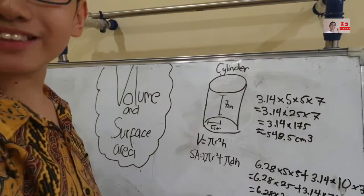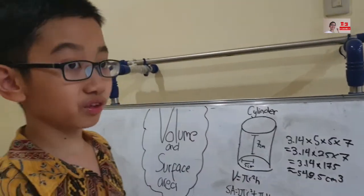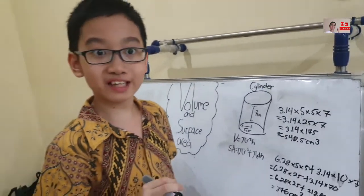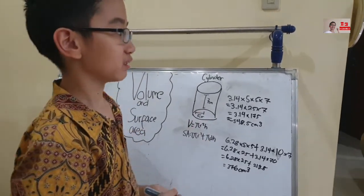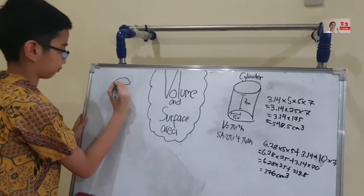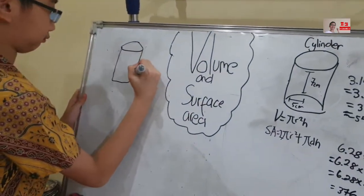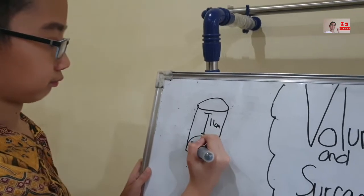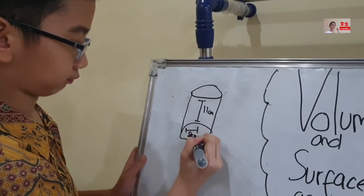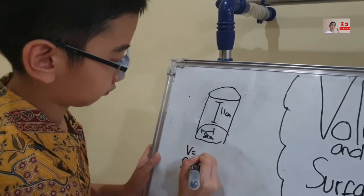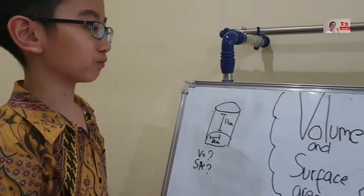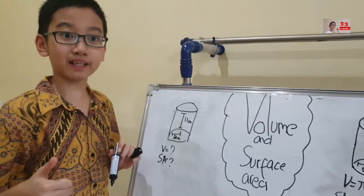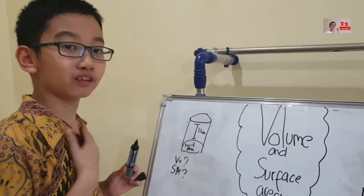And that equals 376 centimeters squared. If you don't understand, you can also repeat this video. Okay, I'll give you an exercise to practice — try to do this at home. If you have an answer, please write it in the comment section below. Have fun in maths! We will see you in the next episode. I'm Darmanto. Thank you.